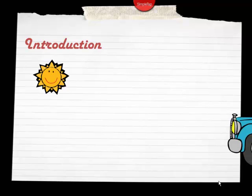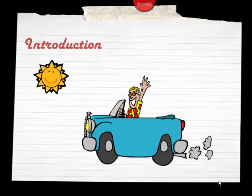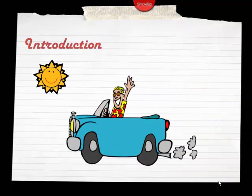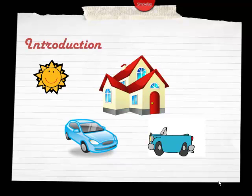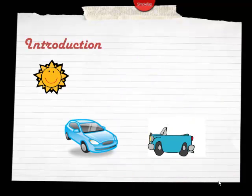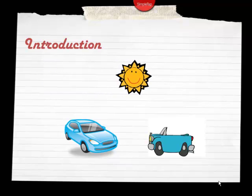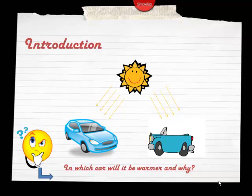Let's start with a little introduction. We have our friend Sam, who's driving a nice little car and going to see his friend Jasmine. He's enjoying a really nice summer day with his roofless car. He's going to park his car right next to Jasmine's. Let's focus our attention on those cars — Jasmine's car has a roof and closed windows, whereas Sam's car has no windows.